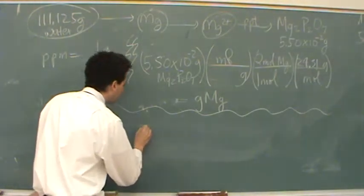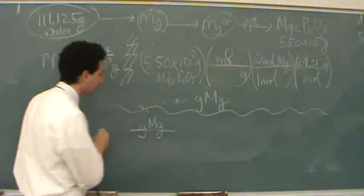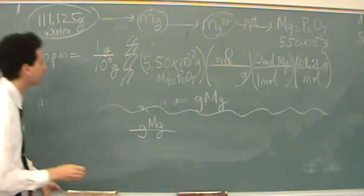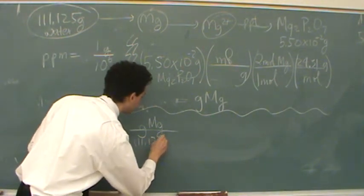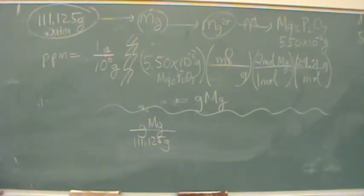We're going to take the mass of magnesium and we're going to divide by the mass of water, 111.125, which is given in the question, 111.125 grams of the water, which includes the magnesium and the water itself. Okay? Is that fair enough? Yeah. Okay. Now, that's what they want for the answer. They just want it in the particular units.